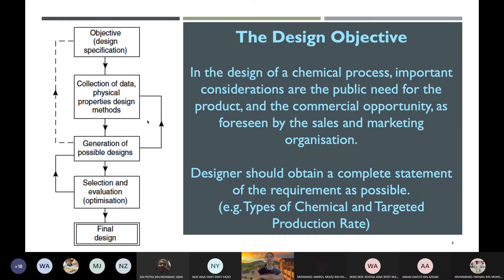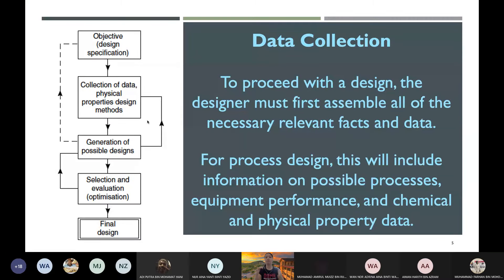Once the objective is known — for example, produce phenol at 400,000 metric tons per annum — the next stage is data collection. You need to assemble all relevant facts and data. I advise getting a sample report from seniors or the internet. Most importantly, choose the process for which you have the most complete information — ideally including equipment, flow, and operating conditions: temperature, pressure, and composition.